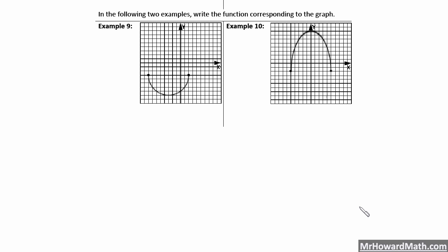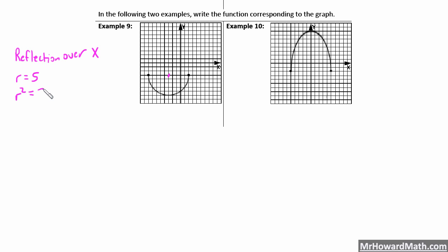These last two examples give us the graph and we need to write the function. We're looking at the bottom half of the circle, so we know we have a reflection over the x-axis. Starting at the center, counting out the radius: 1, 2, 3, 4, 5 in each direction — there are no stretches of any kind, and my radius is 5, so r equals 5 and r squared equals 25. My center point is at negative 3 comma negative 3, meaning the graph moved left 3 and down 3.